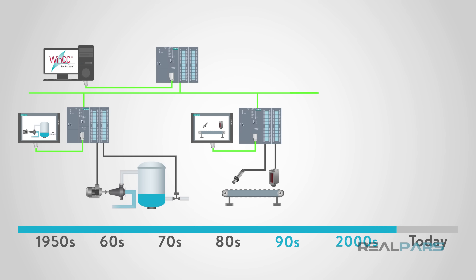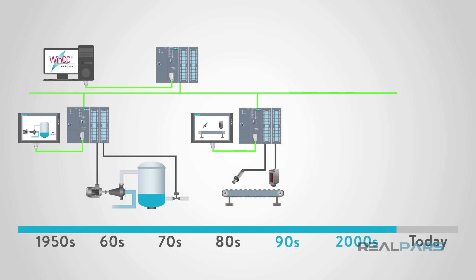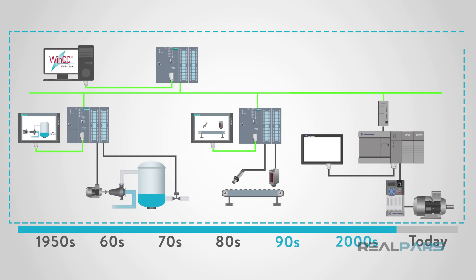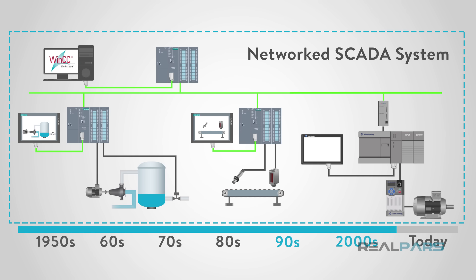Later in the 90s and 2000s, SCADA began to implement open system architectures with communication protocols that were not vendor-specific. As you can imagine, this opened up SCADA's ability to connect with varying vendors. This newer, more improved SCADA was then called a networked SCADA system.